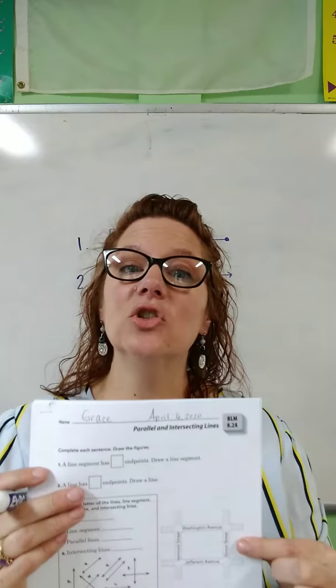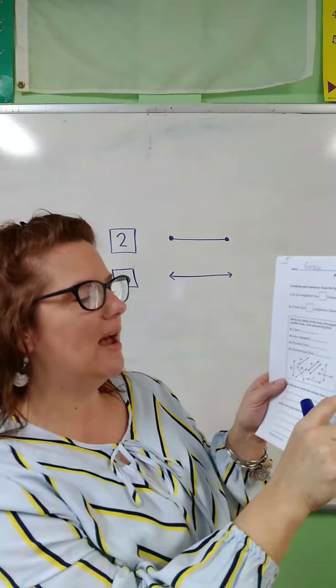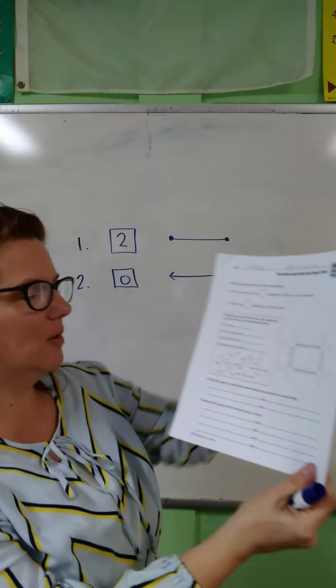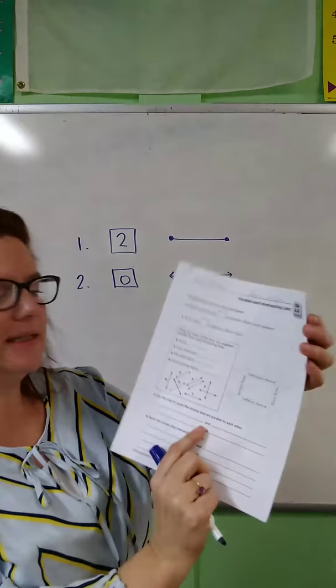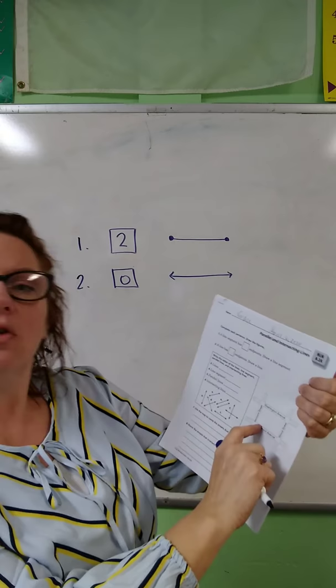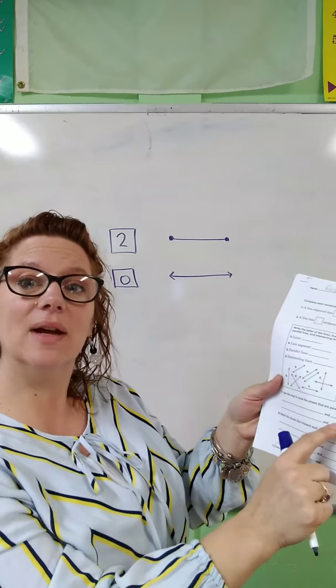Number seven says use the map. On your paper there's a little map showing streets in a neighborhood, and it wants you to write the names of streets that are parallel to each other. Washington Avenue and Jefferson Avenue go in the same direction and are parallel, so write Washington and Jefferson Avenues. Then looking up and down, Vermont Street and Illinois Street are parallel to each other — write those as your second answer.